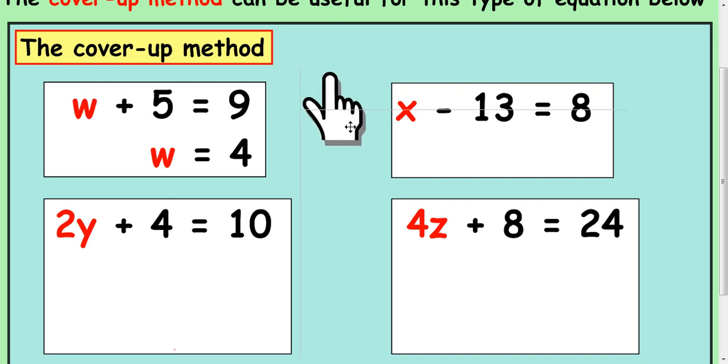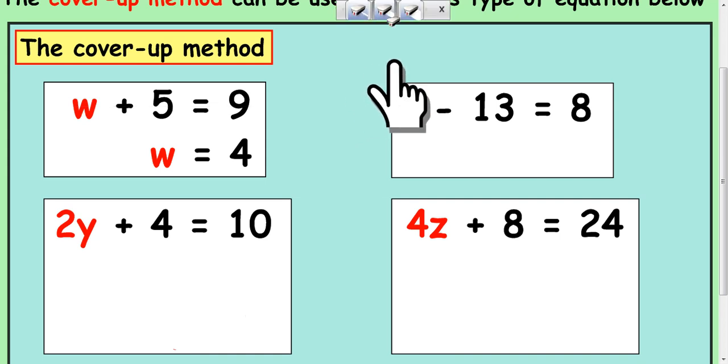The same idea with the takeaway in this second one. I've got x take away 13 equals 8. You say to yourself, what do you take away 13 from to get 8? And you should find your answer is 21.